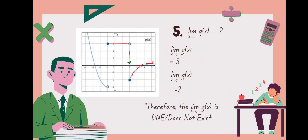Number 5: evaluate the limit of g of x as x approaches 2. As you can see in the graph, the limit of g of x as x approaches 2 from the left equals 3, and the limit as x approaches 2 from the right is equal to negative 2. Therefore, the limit of g of x as x approaches 2 does not exist.